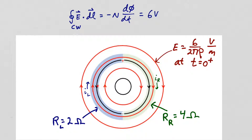As the electric field intensity in the left half ring is reduced, the current there decreases. As the electric field intensity in the right half ring increases, the current there increases. The current in the left half ring decreases and the current in the right half ring increases until the two currents are equal. When the two currents are equal, there is no longer any change in the charges at the boundaries and steady state is reached.